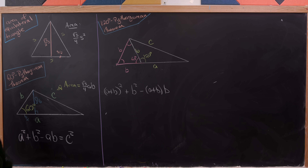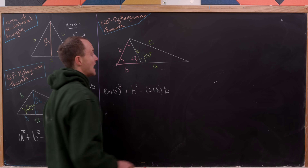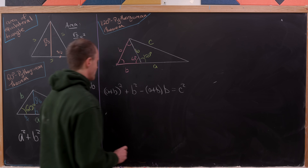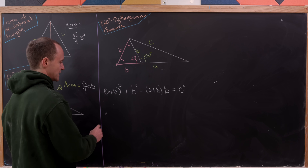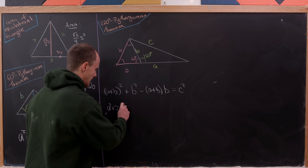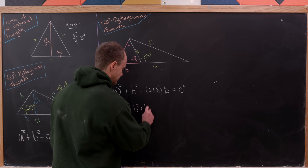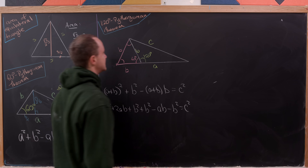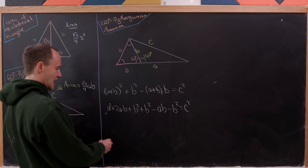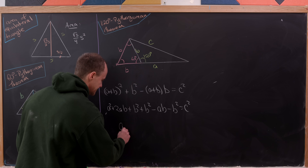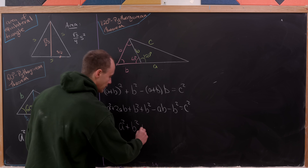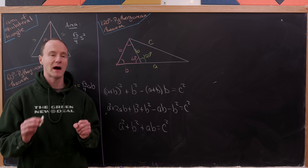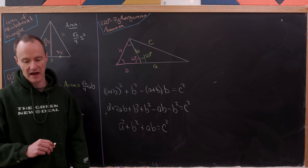Expanding that out: A squared plus 2AB plus B squared plus B squared minus AB minus B squared equals C squared. Simplifying, we get A squared plus B squared plus AB equals C squared. That is the 120 degree Pythagorean Theorem.